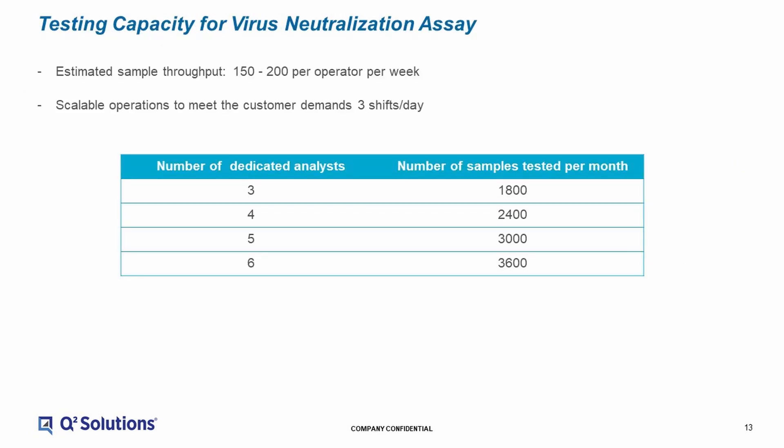Like the ELISA methodology, we have a scalable operation in the Center of Vaccine Excellence in San Juan Capistrano. An individual operator can do as many as 200 samples per week. This table illustrates the throughput for six analysts, and we can scale the operation to meet the demands of your clinical trials.